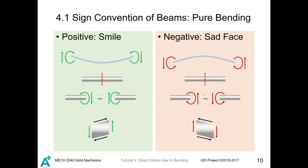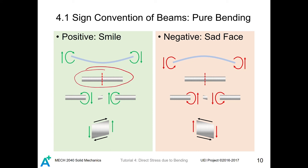Now let's talk about sign convention of beams in pure bending. For positive moment, it will generate a positive mood — you will smile when the moment is bending your mouth upward. A negative moment will bring a sad face. When considering a piece of material which is cut, you can see this material is separated into the left section and the right section. The sign convention at the right-hand end of the left section follows the moment convention shown here.